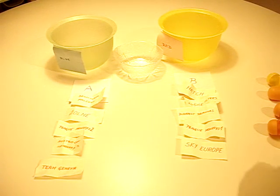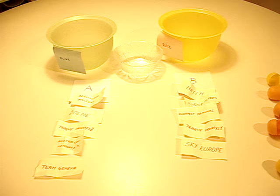So those are the groups. Group A: Bratislava Falcons, Žovne, Prague Monkeys two, Austria Kontrol Ice Hockey team and Team Geneva. In group B we have Hatch, Košice Flyers, Budapest Piranjas, Prague Monkeys one and Sky Europe.